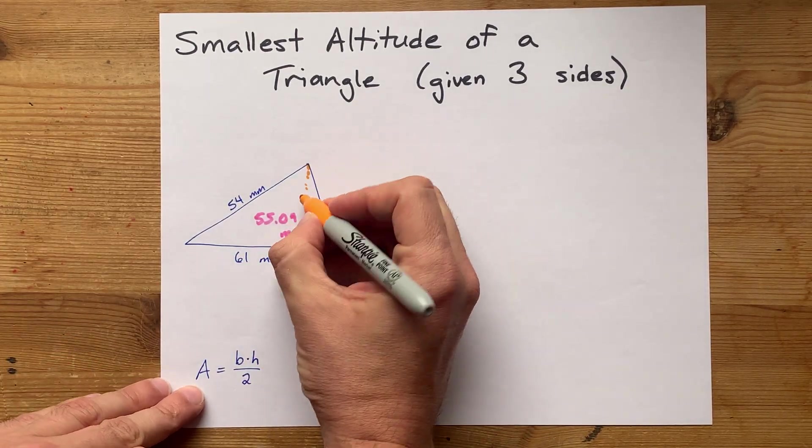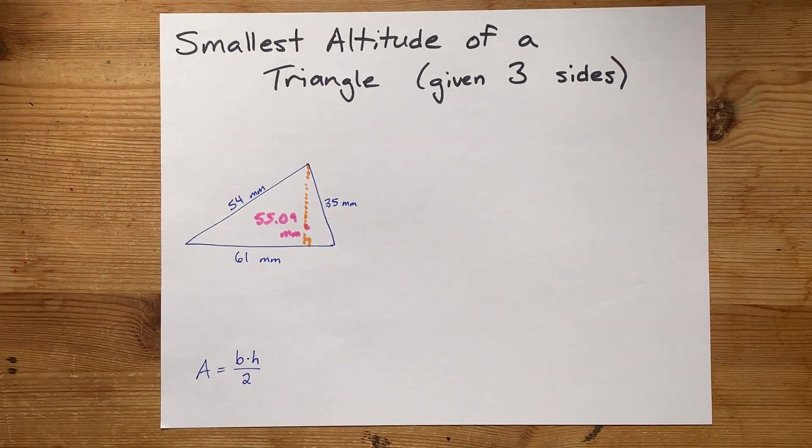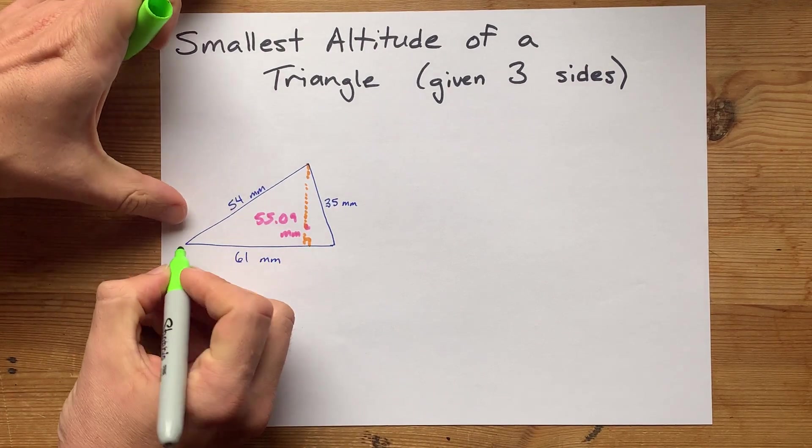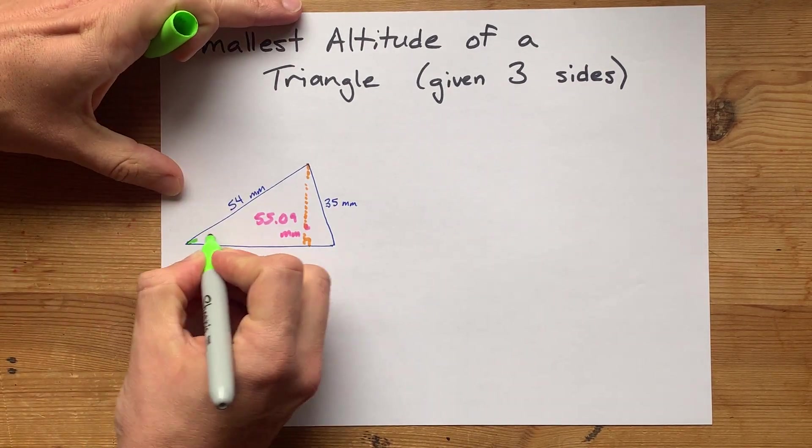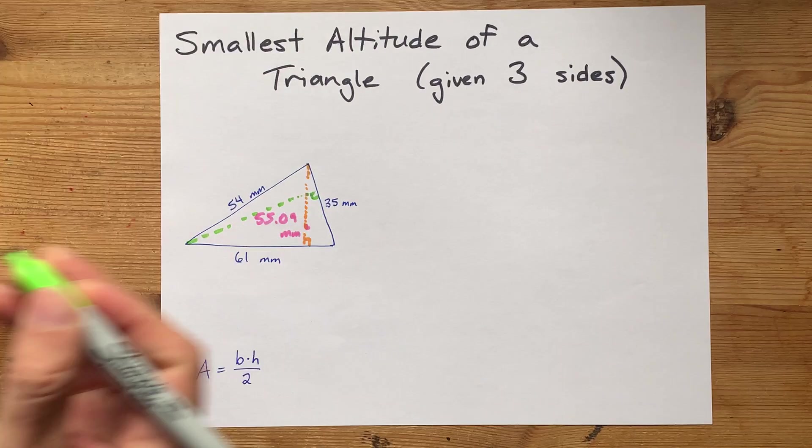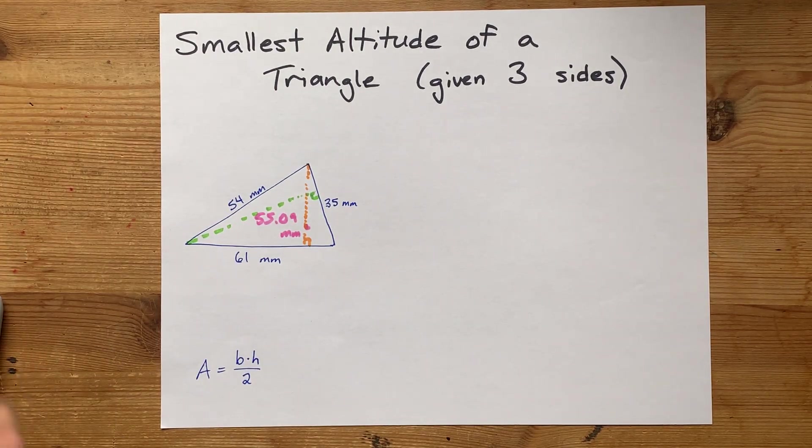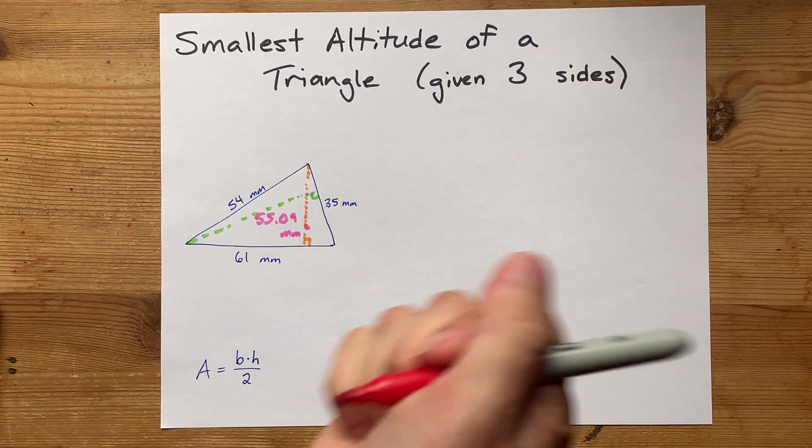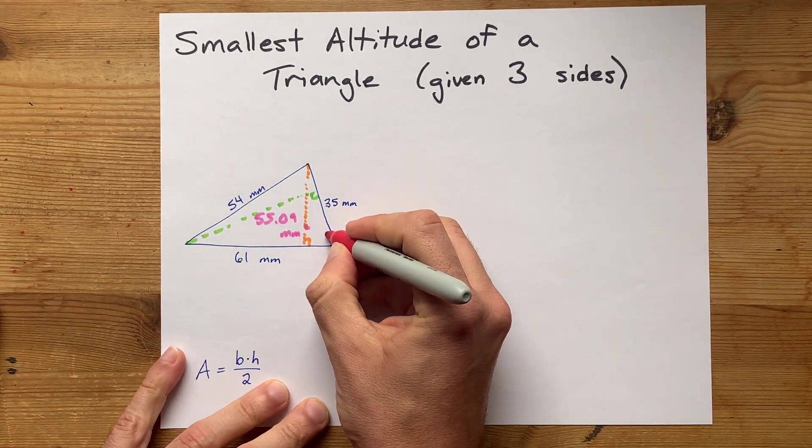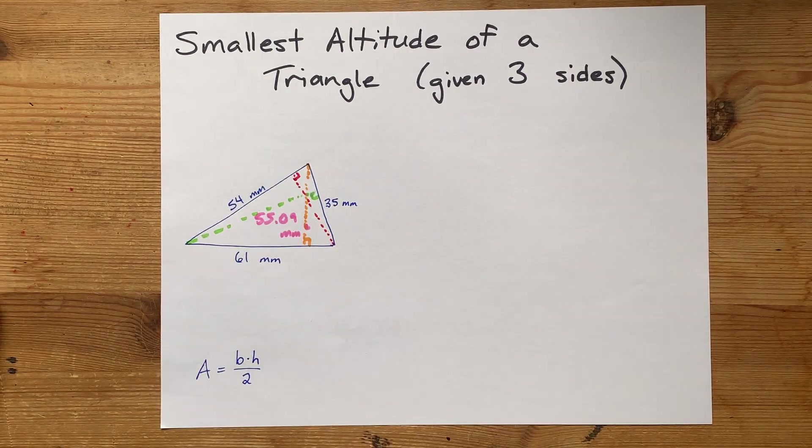And there are three altitudes for each triangle. I've done one in orange there. I'll do one in green. I have to start at another corner and draw a line until it meets the other side at 90 degrees. And I'll do another one in red. Start at one corner. Yeah, look, there it is. And it meets the other one at 90 degrees.